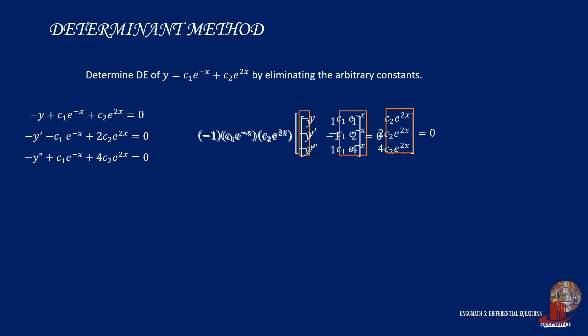Thus, we can simplify the function as negative 1 times c1 times e raised to negative x times c2 times e raised to 2x multiplied by the matrix is equal to zero. Next, all the common values out of the matrix are then transposed to the other side. Since the right side is just zero, we are left with simply the matrix equal to zero.